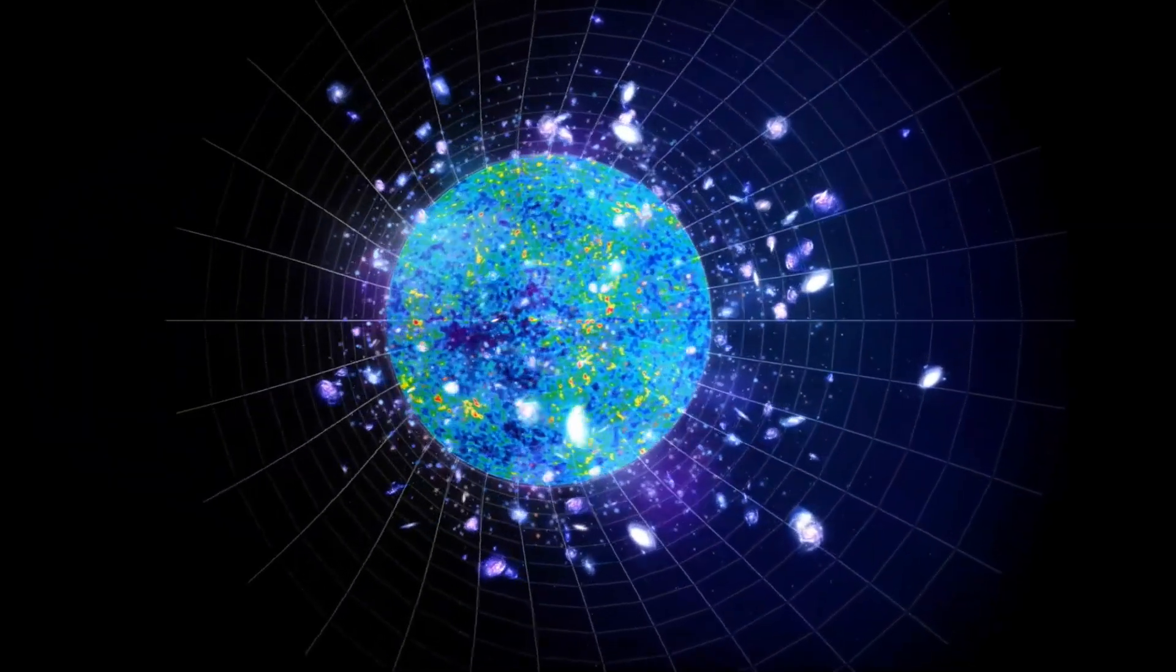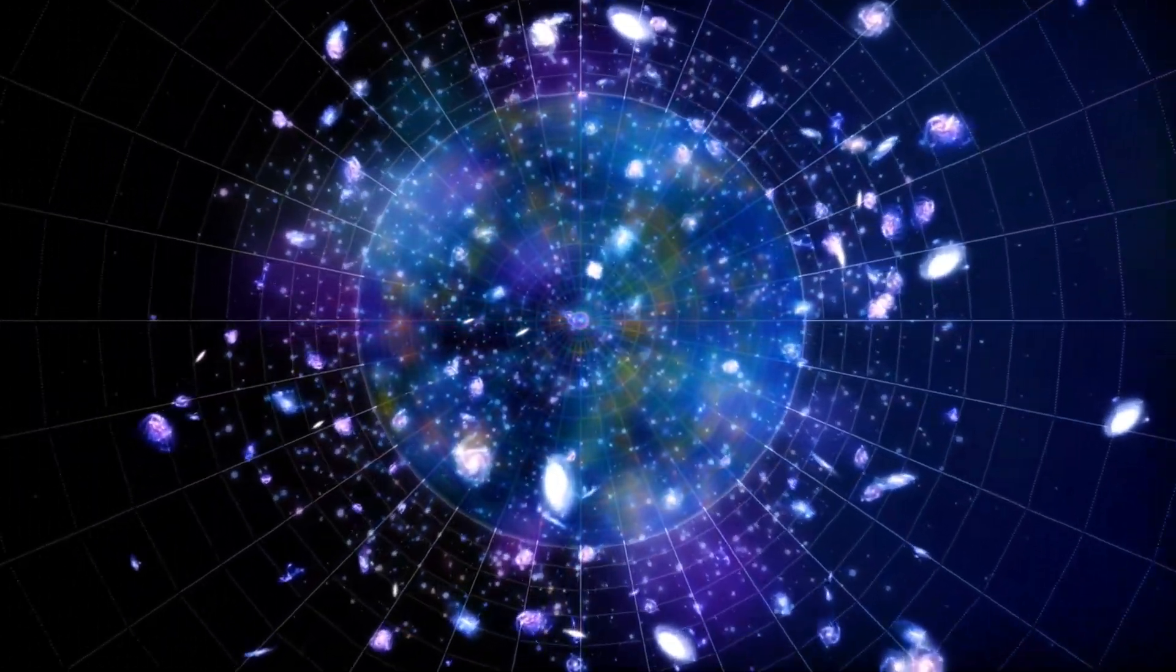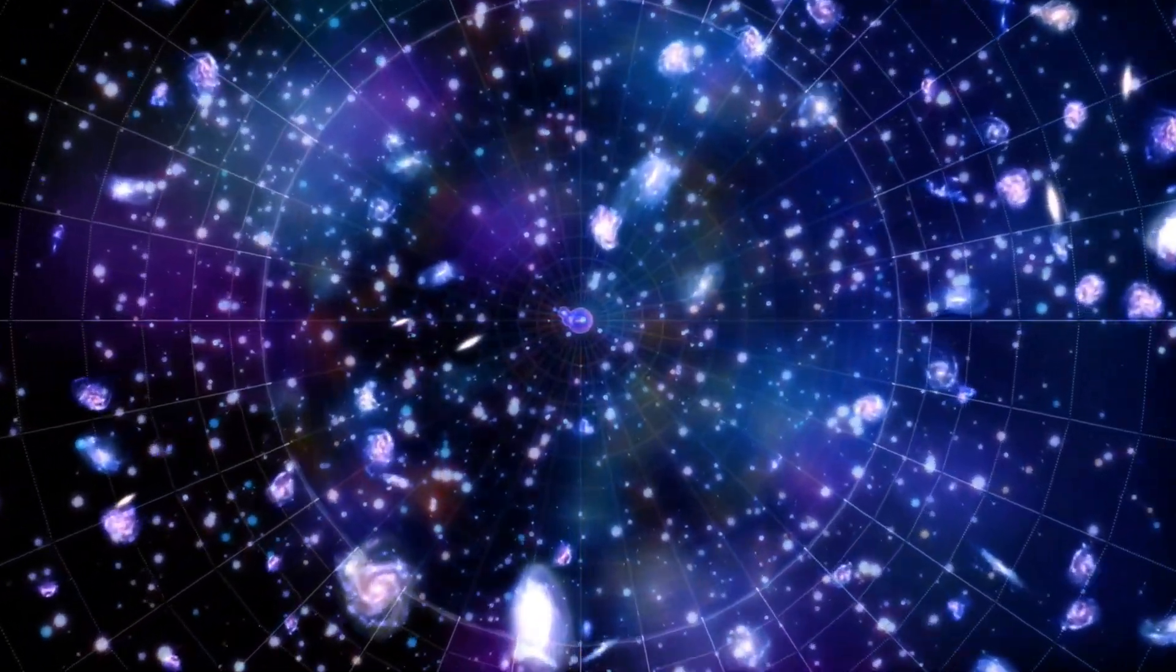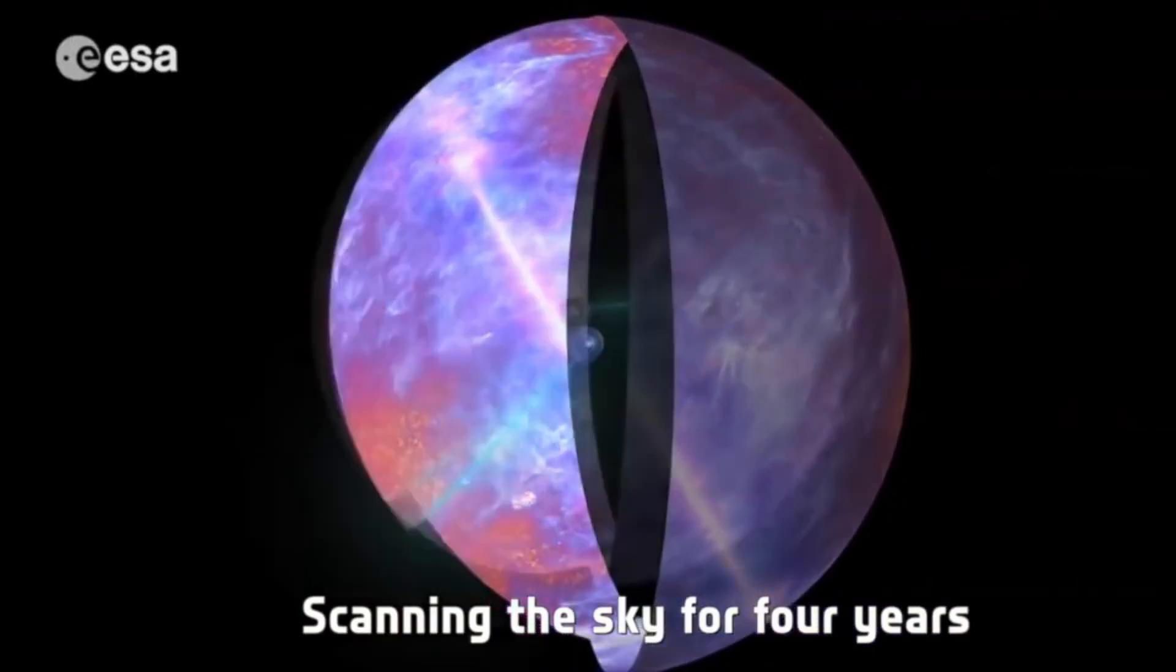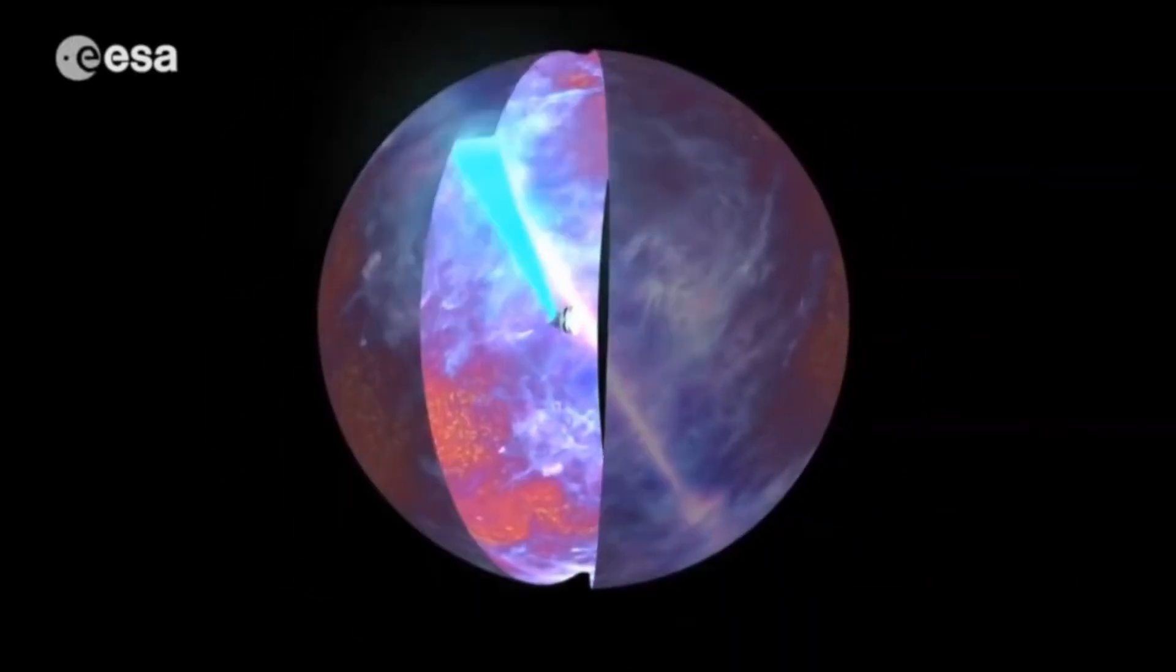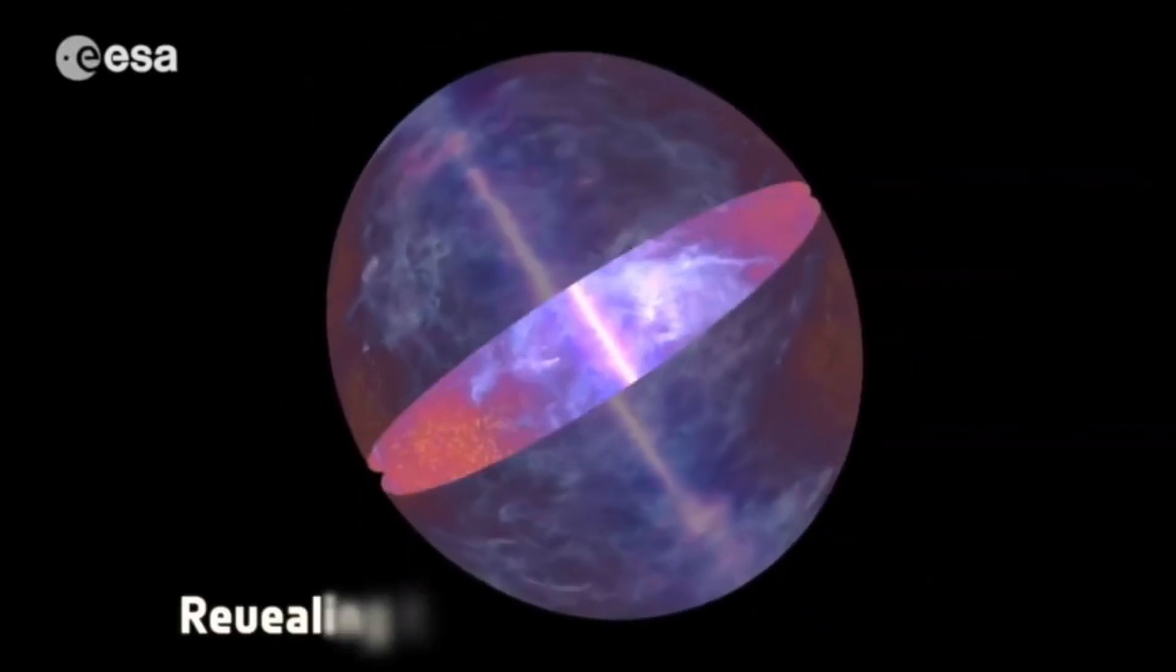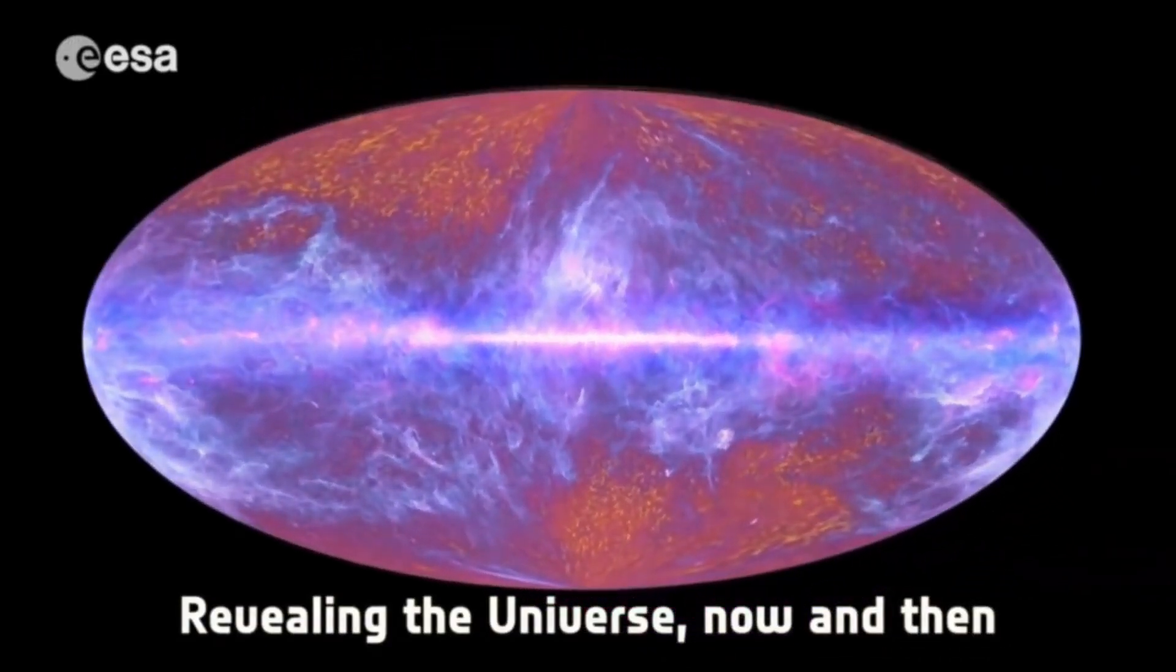According to theorists, the expansion of our universe began quickly before subsequently slowing down in the same way that a balloon would when you inflate it. As a result of this exponential expansion, our universe, as well as other potential universes, was formed as a large bubble-like multiverse.